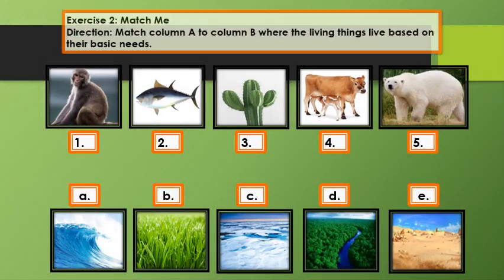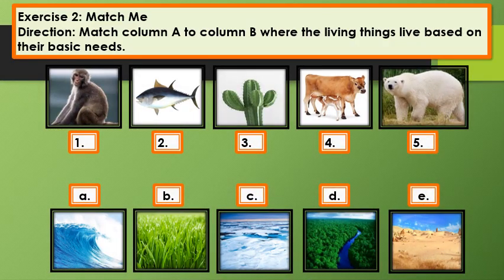Exercise 2: Match Me. Match column A to column B — where do the living things live based on their basic needs? Number 1: Monkey. Number 2: Fish. Number 3: Cactus. Number 4: Cow. Number 5: Polar Bear.